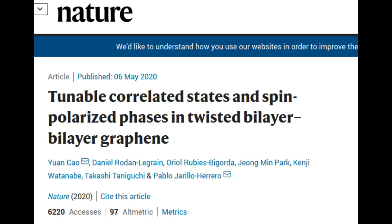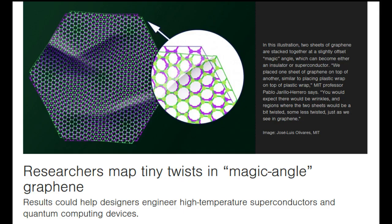This suggests that researchers may be able to more easily and controllably study the exotic properties of magic angle graphene in four-layer systems. These two studies are aiming to better understand the puzzling physical behavior of magic angle twistronics devices. It could help designers engineer high-temperature superconductors and quantum computing devices.